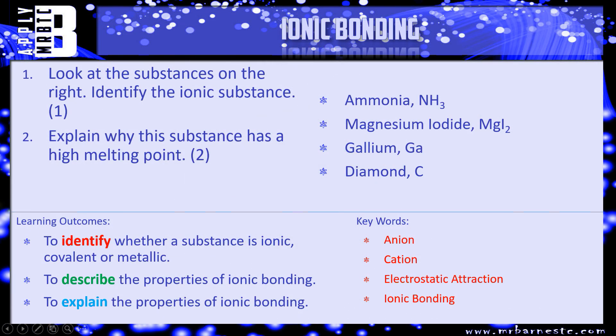Let's look at the type of question the examiner can ask. Question one: identify the ionic substance from the following — ammonia NH3, magnesium iodide MgI2, gallium Ga, and diamond C. Out of those four, which one contains a metal and a nonmetal? That's your ionic compound. Question two: explain why this substance has a high melting point. We know it's ionic — what makes an ionic compound have a high melting point? Pause the video and have a go.